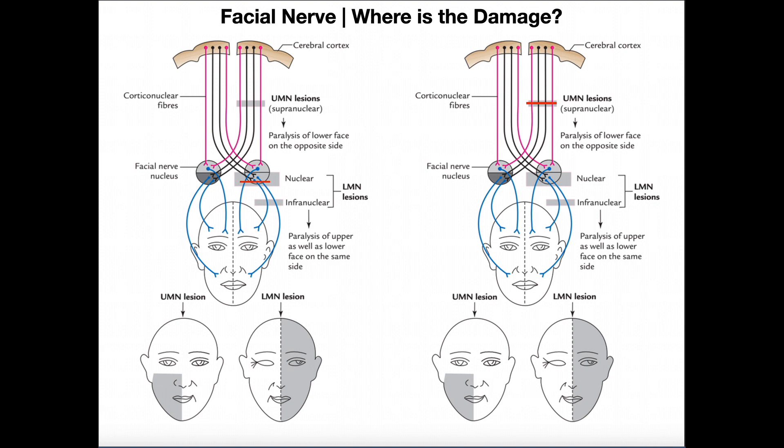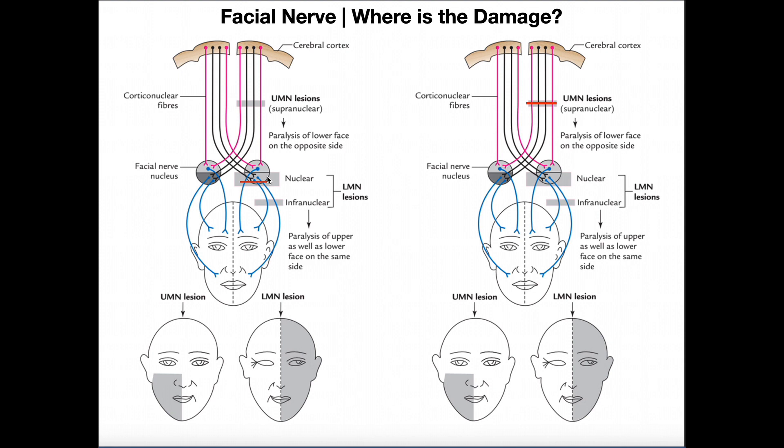Hopefully you found that enlightening. Now we're going to look at these pictures and really prove to ourselves what happens if we have a lower motor neuron lesion or an upper motor neuron lesion — starting with the lower, because it's a little bit more intuitive. Up here we have the cerebral cortex, really the precentral gyrus area. These little circles represent the cell bodies of the upper motor neurons of each of the facial nerves, left and right.